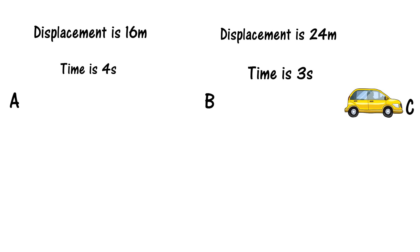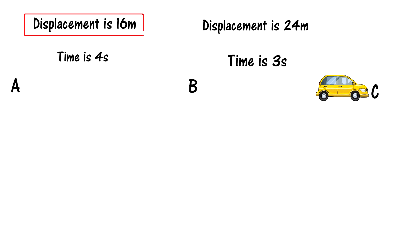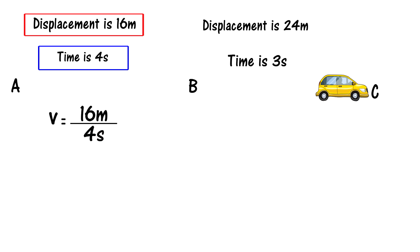We calculate the velocity from point A to point B: displacement is 16 meters, time is 4 seconds. So velocity equals 16 meters divided by 4 seconds, which gives us 4 meters per second.